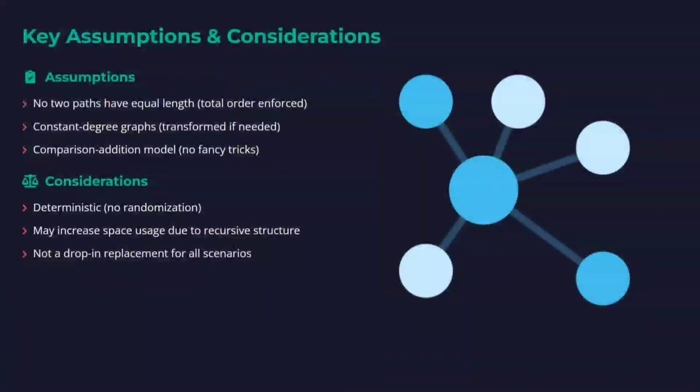Key assumptions: no two paths have equal distance, constant degree graphs, comparison addition model, the model is deterministic with no randomness. It may increase space complexity, so while it saves on time, it may take a hit on space.